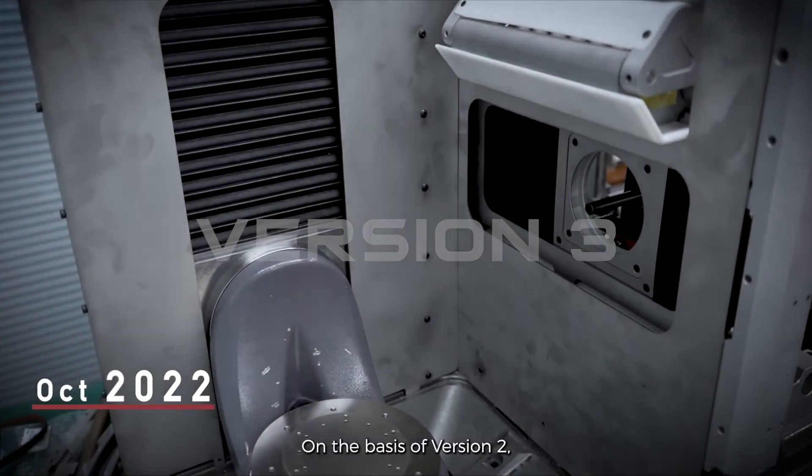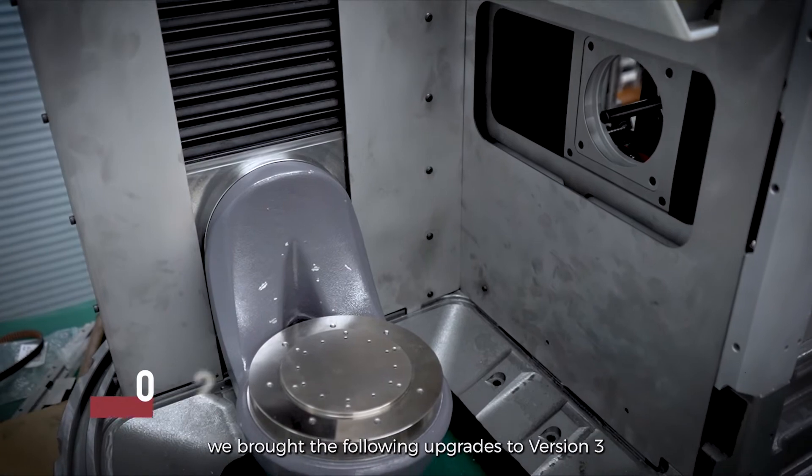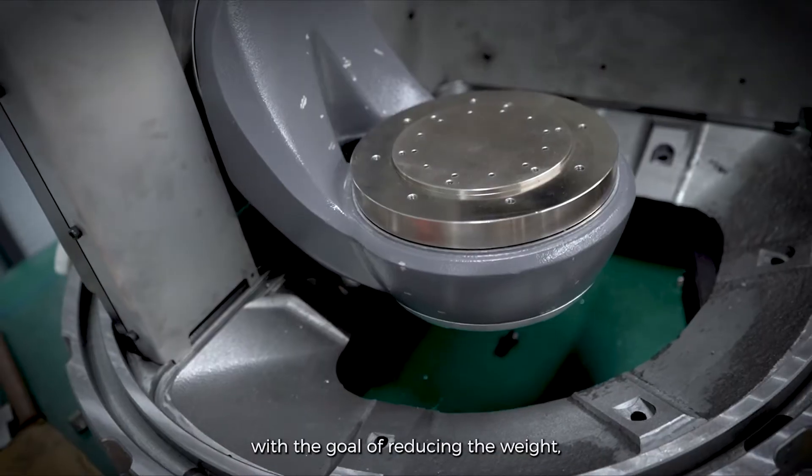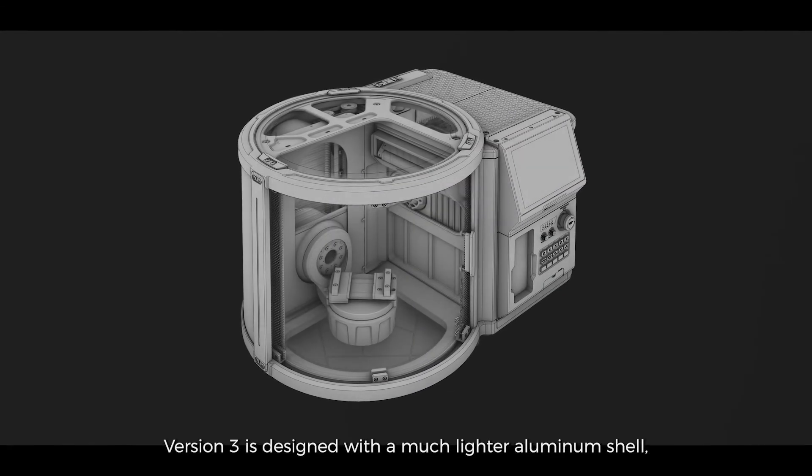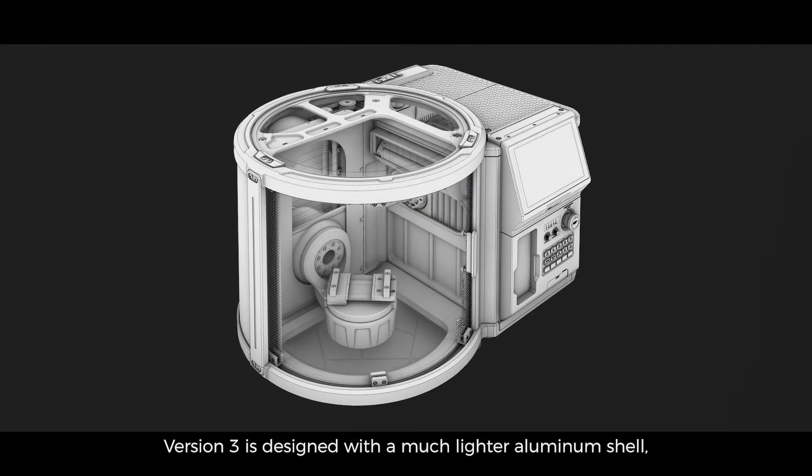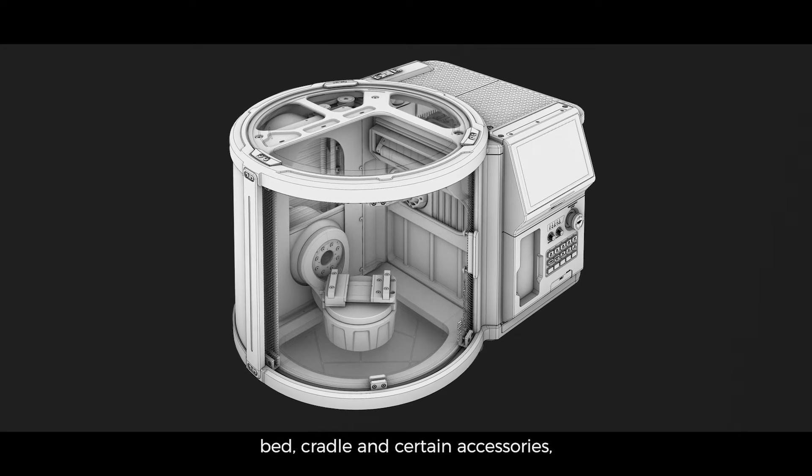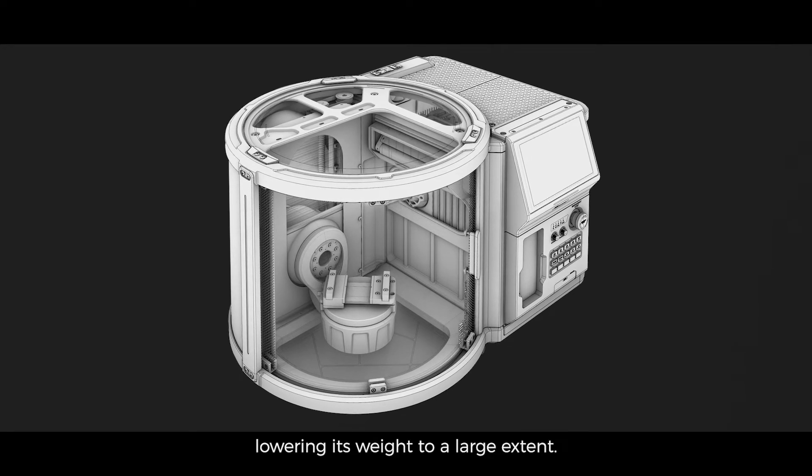On the basis of version 2, we brought the following upgrades to version 3, with the goal of reducing the weight, facilitating assembly and use. Version 3 is designed with much lighter aluminum shell, bit, cradle and certain accessories, lowering its weight to a large extent.